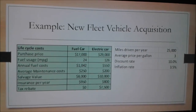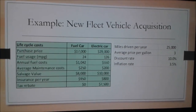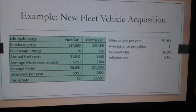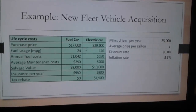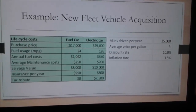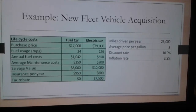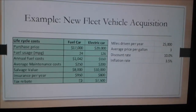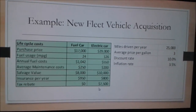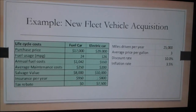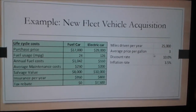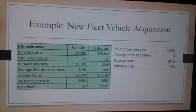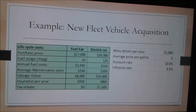Let's review a real world example. The company is trying to choose a vehicle for its fleet and has two options: to purchase a fuel car or an electric car. When you look at the purchase price of the two vehicles, the fuel car price is significantly lower than the electric car price. However, without taking into account operations and maintenance costs, it's hard to tell which car is going to be the better investment. We'll assume a discount rate of 10%, an inflation rate of 3.5%, and both cars will be used for a period of 5 years and then sold.